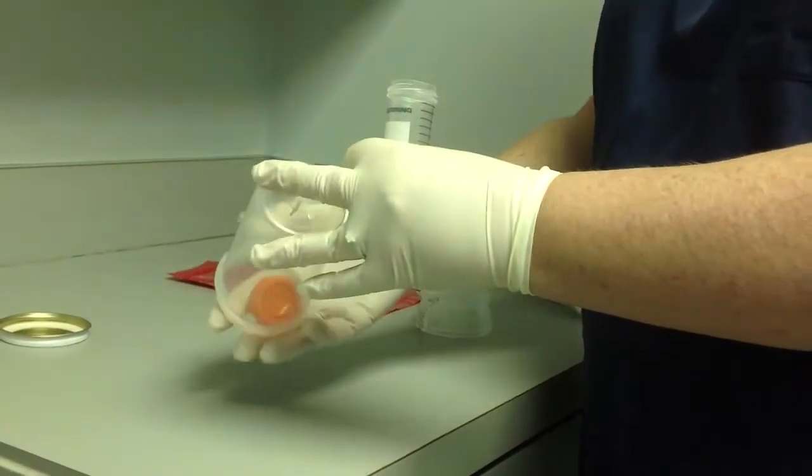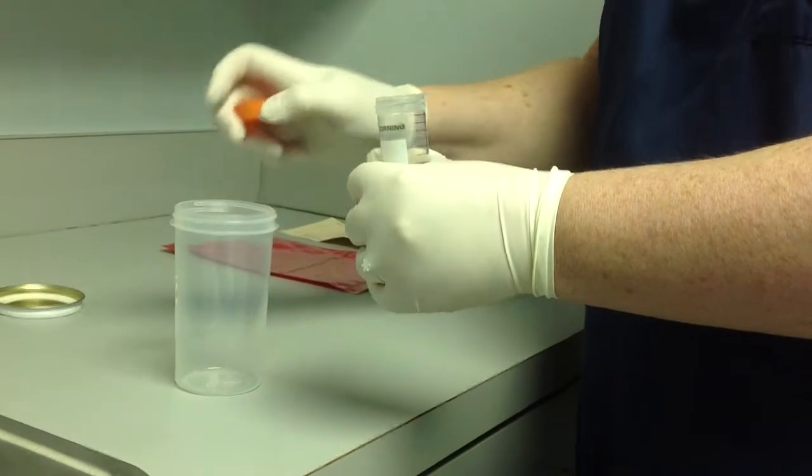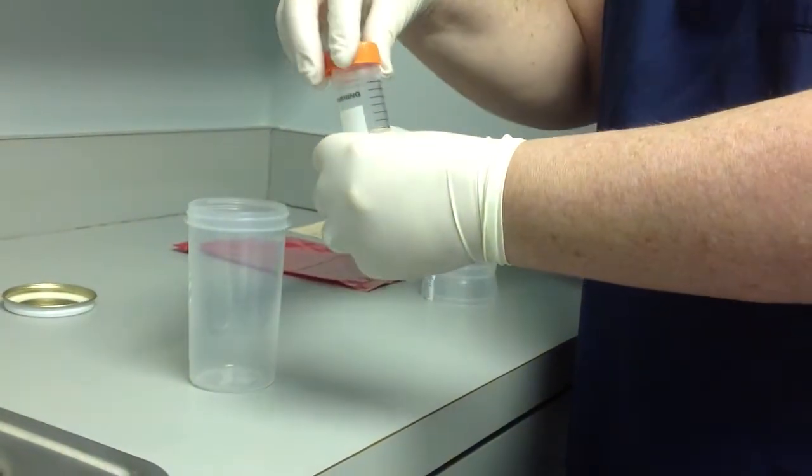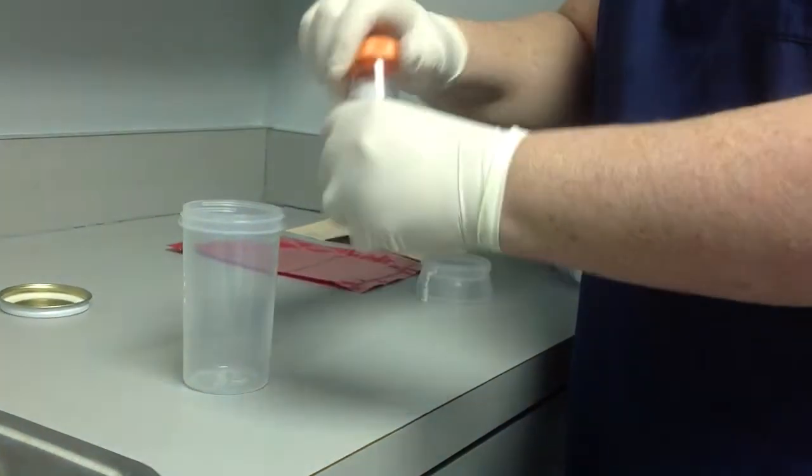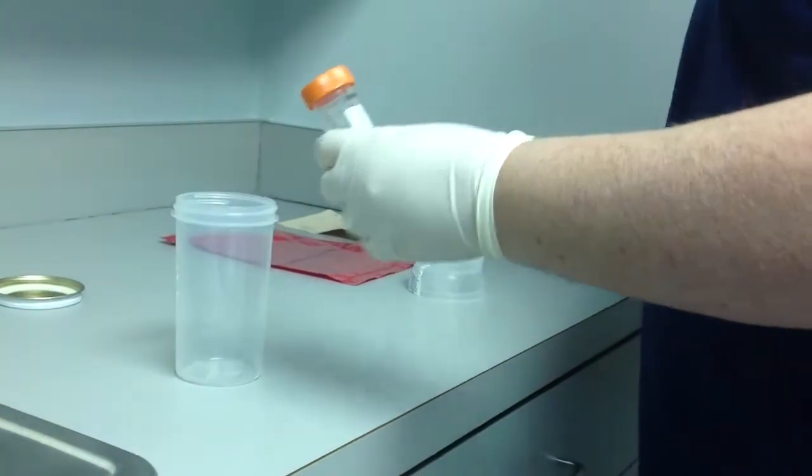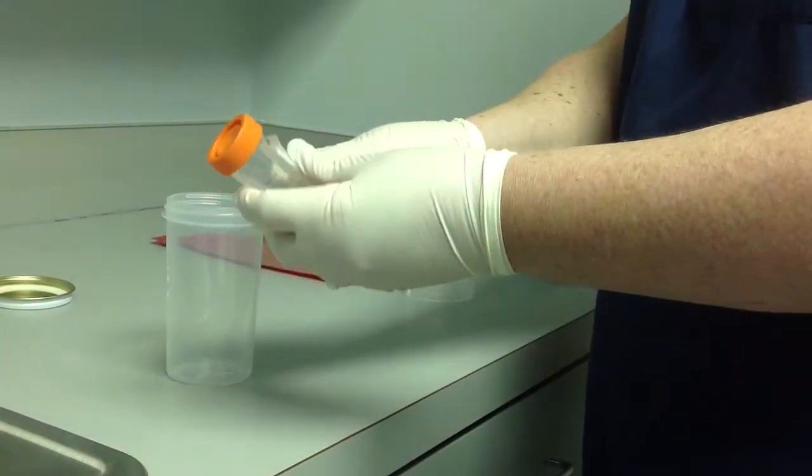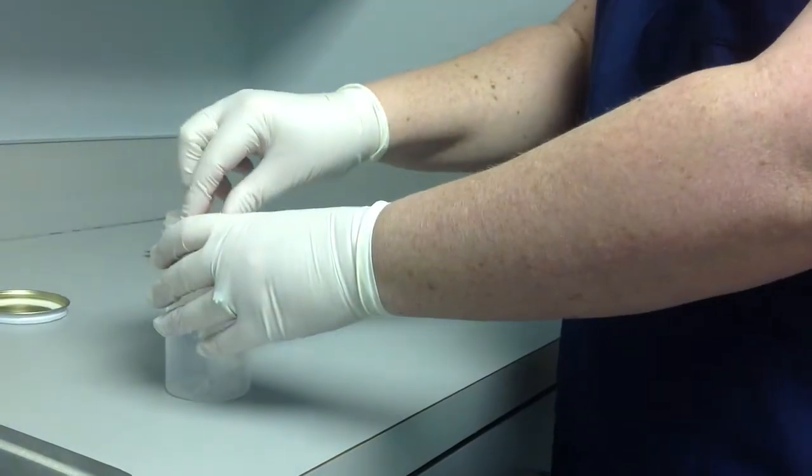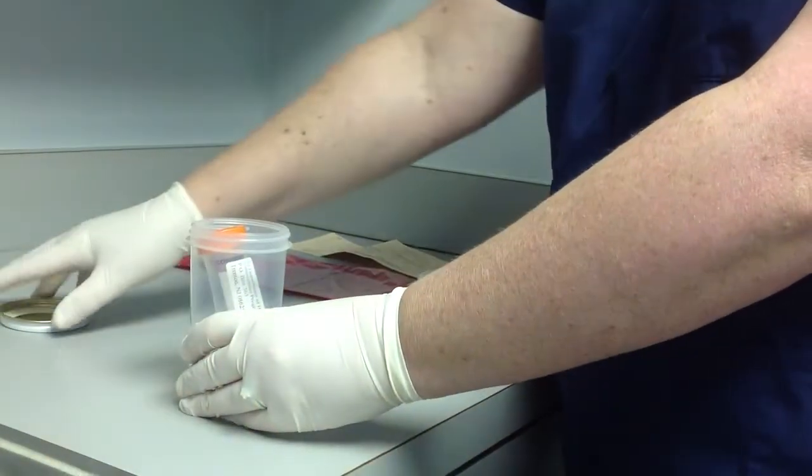Dispose of the funnel in an appropriate manner. Tightly close the centrifuge tube with the orange plastic cap. Label the centrifuge tube with two identifiers. Place the centrifuge tube into the large plastic container and replace the white cap.